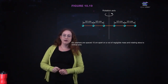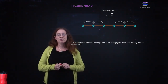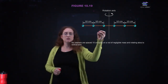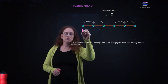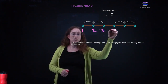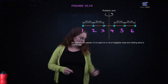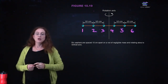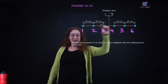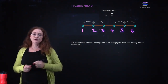Six washers are spaced 10 centimeters apart on a rod of negligible mass, rotating about a vertical axis. I'm going to call these particles 1, 2, 3, 4, 5, and 6, and calculate the moment of inertia about this axis. Note that if I rotated about the other axis instead, I would have a totally different moment of inertia.